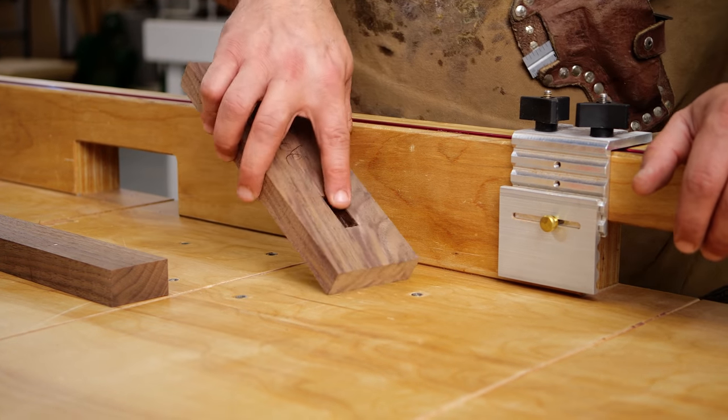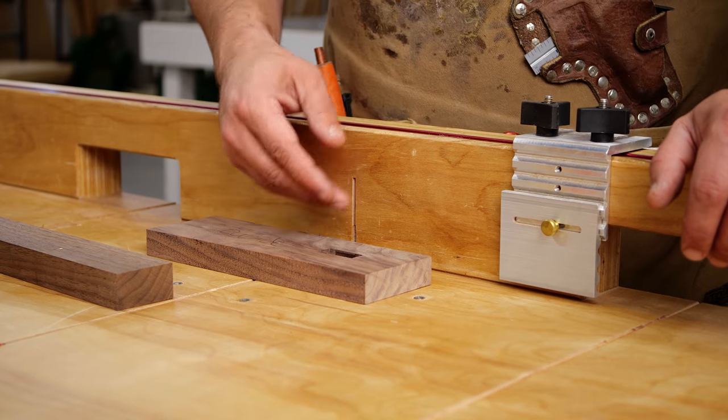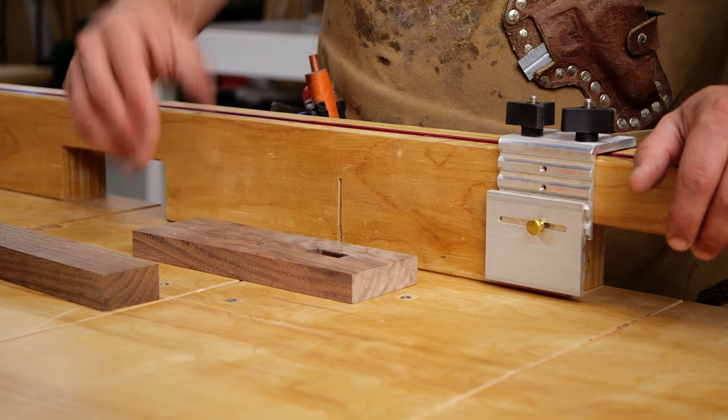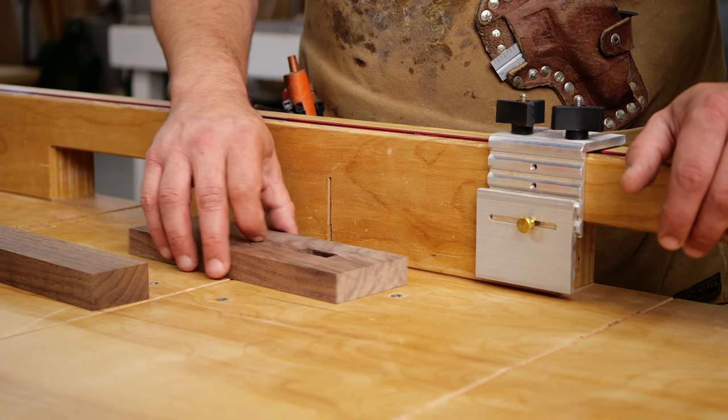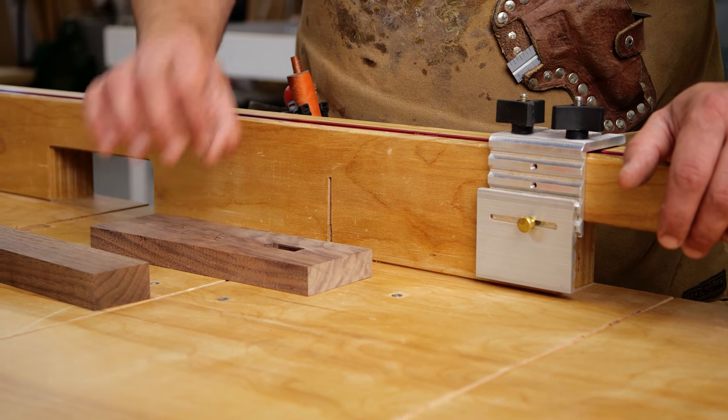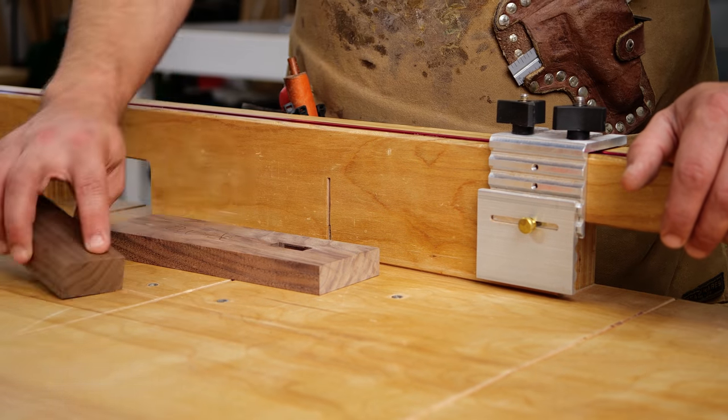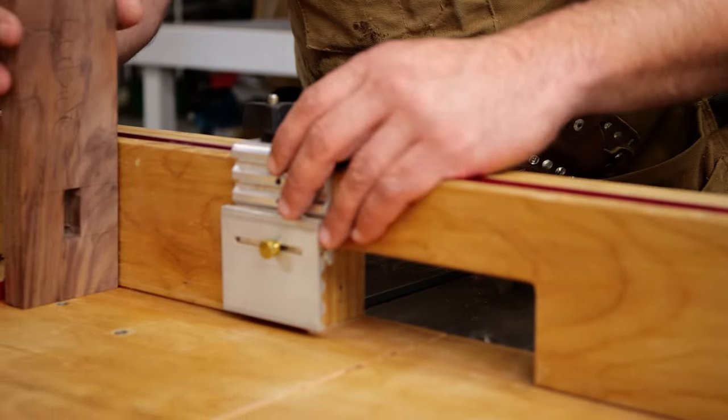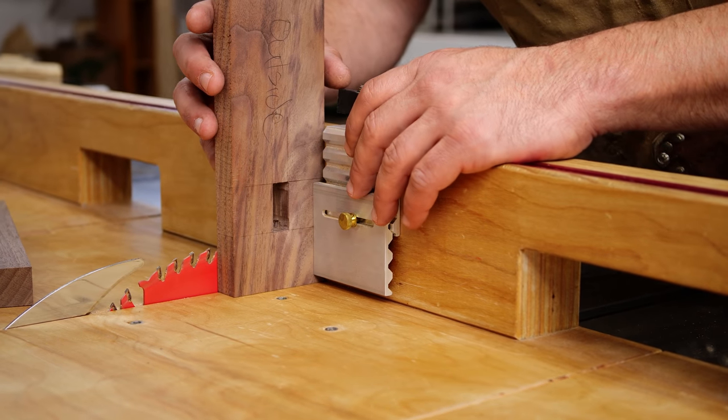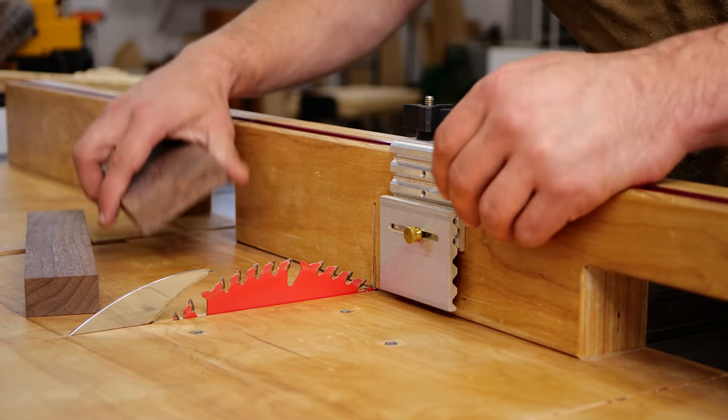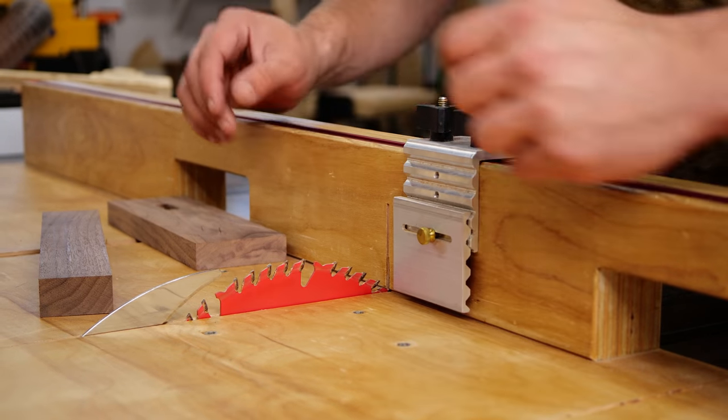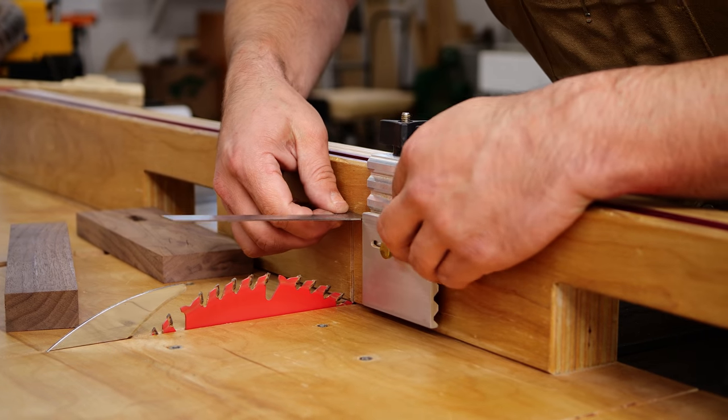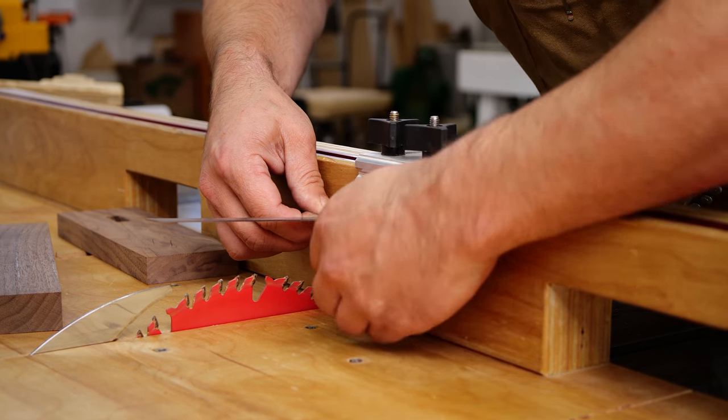For laying out our tenon, because this is a through mortise and tenon with wedges, I'm going to try and make it proud. Doesn't always happen, I might flush trim it, but it would be cool if we can keep about a quarter inch on it. So what I'm going to do is set my distance with my stop block. I'm just going to take my stop block and slide my piece in between here, and then I'm going to take it out a quarter inch by sliding the micro adjust over.